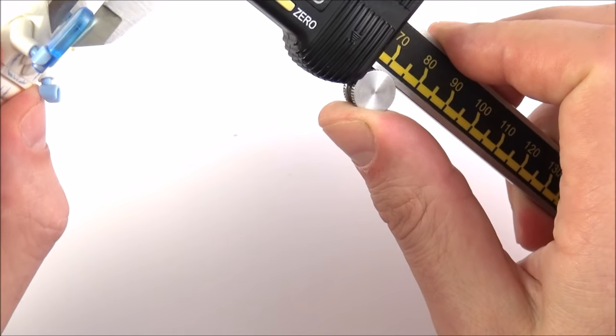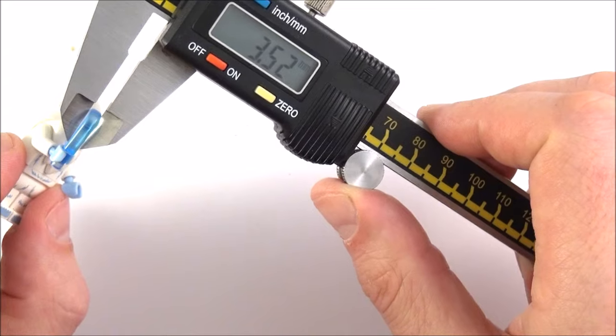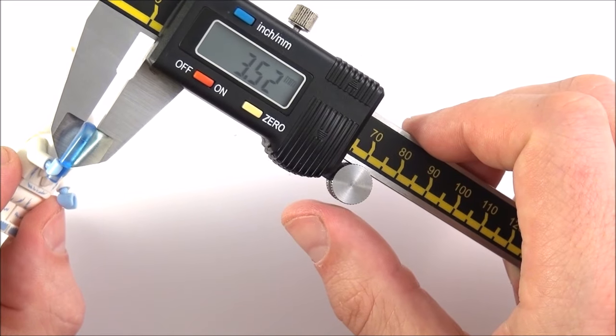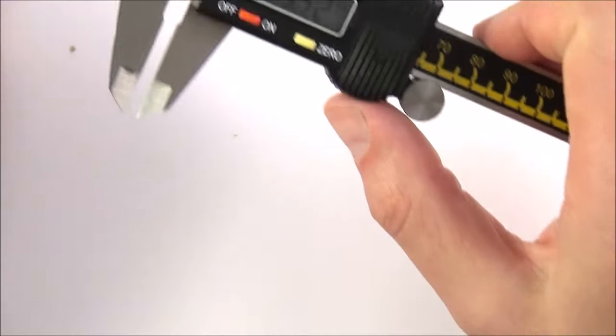If I just close it very gently, the reading we get is 3.52 for that part of the ice lolly.